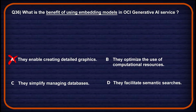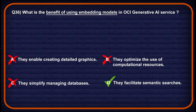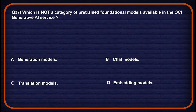Option C: they simplify managing databases — embedding models support search, not database administration, so again the wrong choice. Option D: they facilitate semantic searches — embedding enables context-aware search by capturing meaning, so this might be a potential answer. Option D will be the correct one.